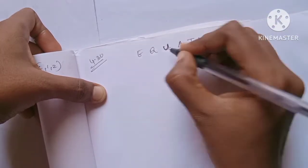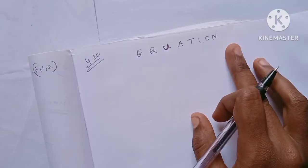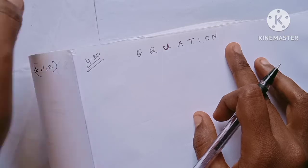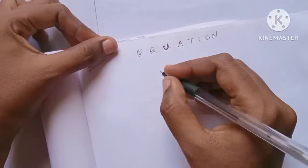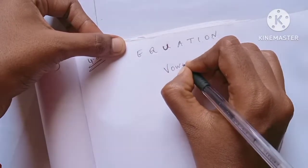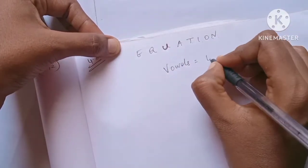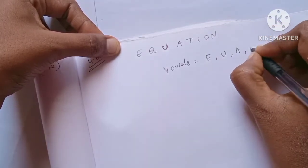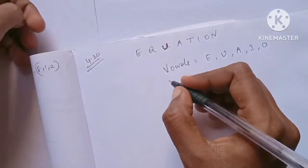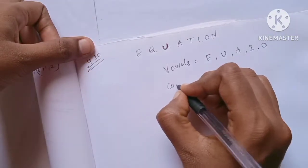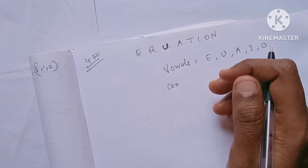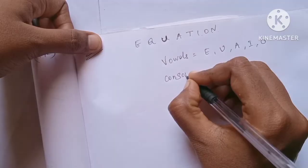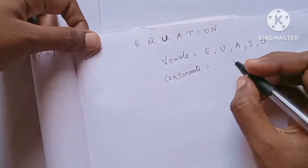Now let's identify the vowels. The vowels are: E, U, A, I, O — so there are 5 vowels. The consonants are Q, T, and N — so there are 3 consonants.